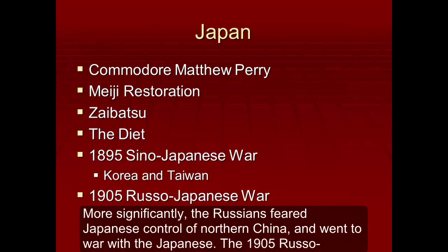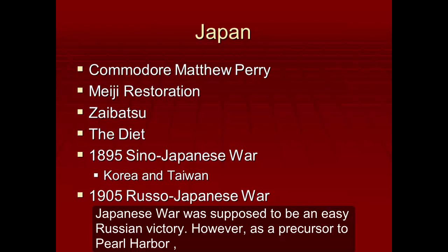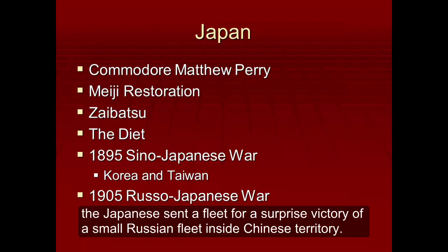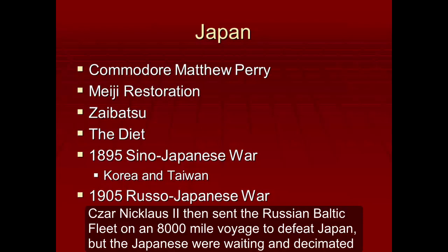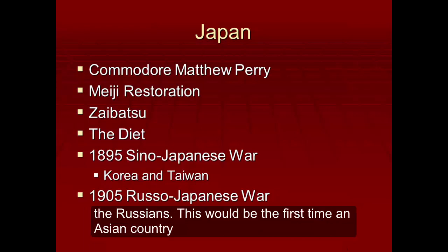More significantly, the Russians feared Japanese control of northern China and went to war with the Japanese. The 1905 Russo-Japanese War was supposed to be an easy Russian victory. However, as a precursor to Pearl Harbor, the Japanese sent a fleet for a surprise victory over a small Russian fleet inside Chinese territory. Czar Nicholas II then sent the Russian Baltic fleet on an 8,000-mile voyage to defeat Japan, but the Japanese were waiting and decimated the Russians.